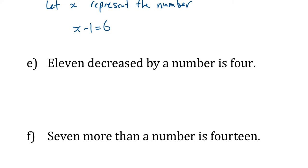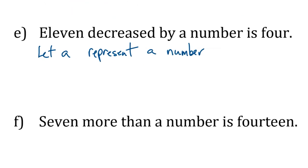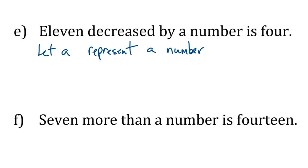This next one again is a little bit different. 11 decreased by a number is 4. So let's start with that. That's why I used A. Again, pick whatever you like. Pick your favorite. Now, how do you write the math sentence that means the same thing as this? Yeah, very good.